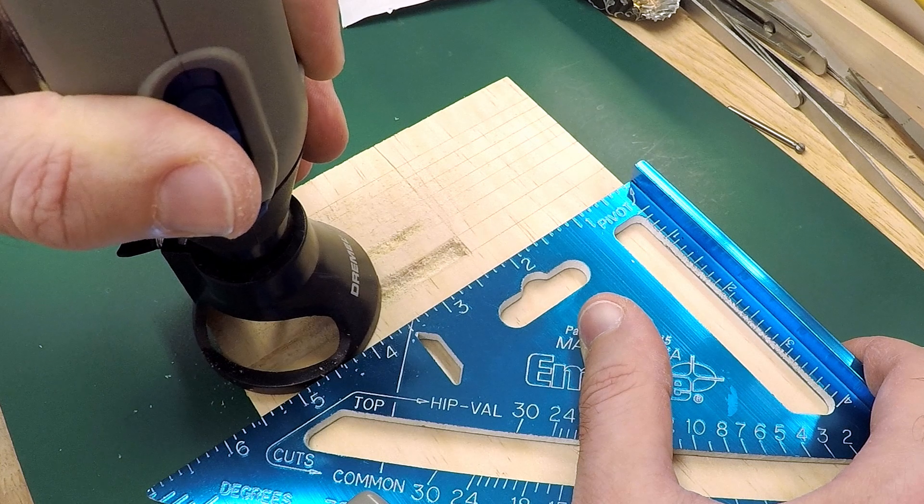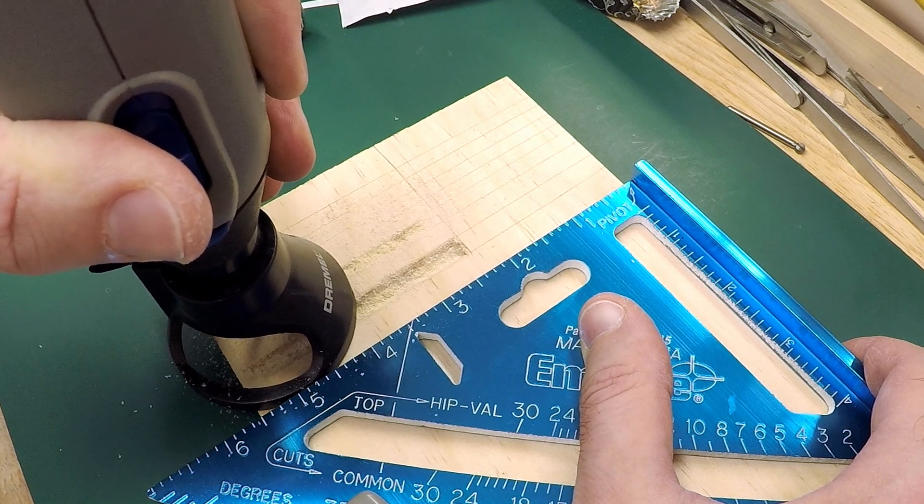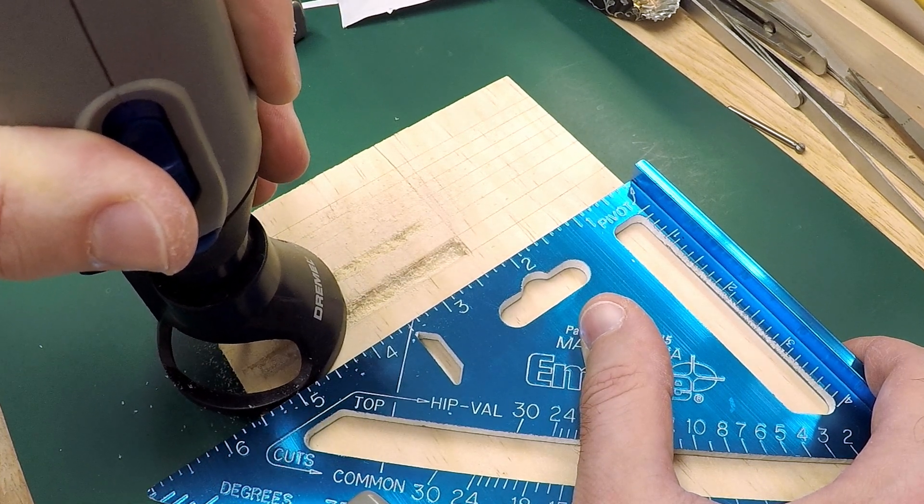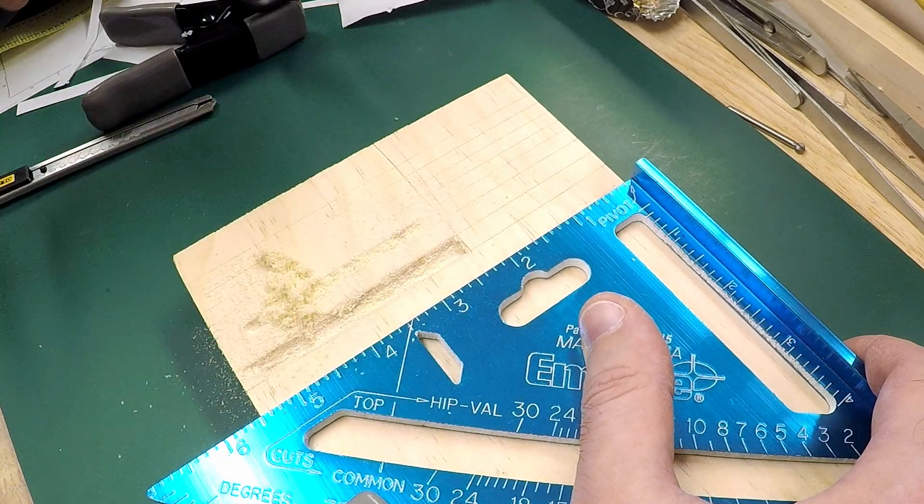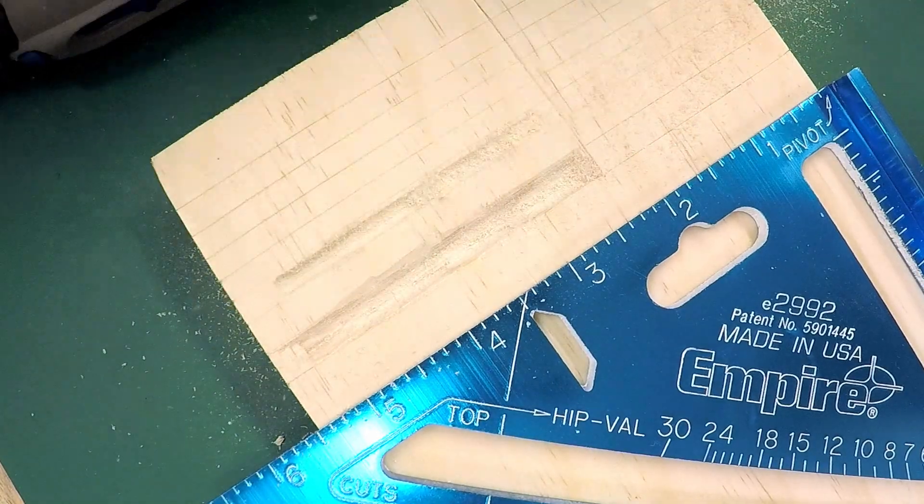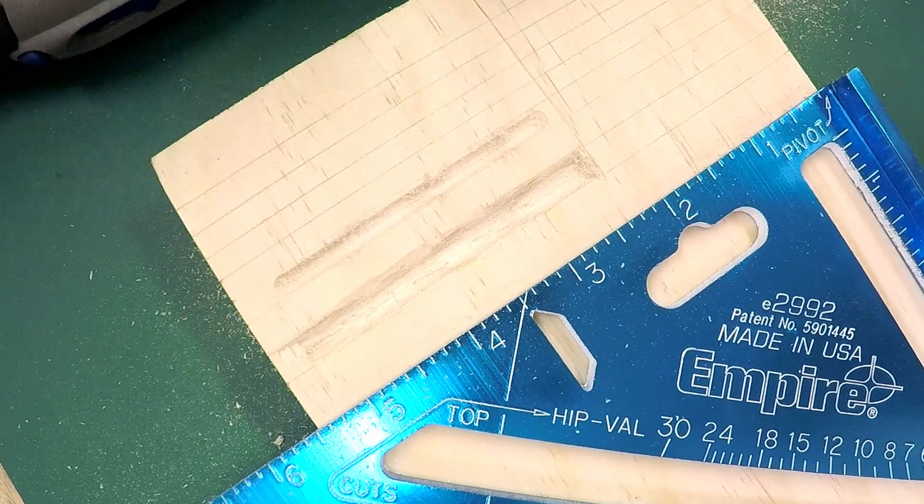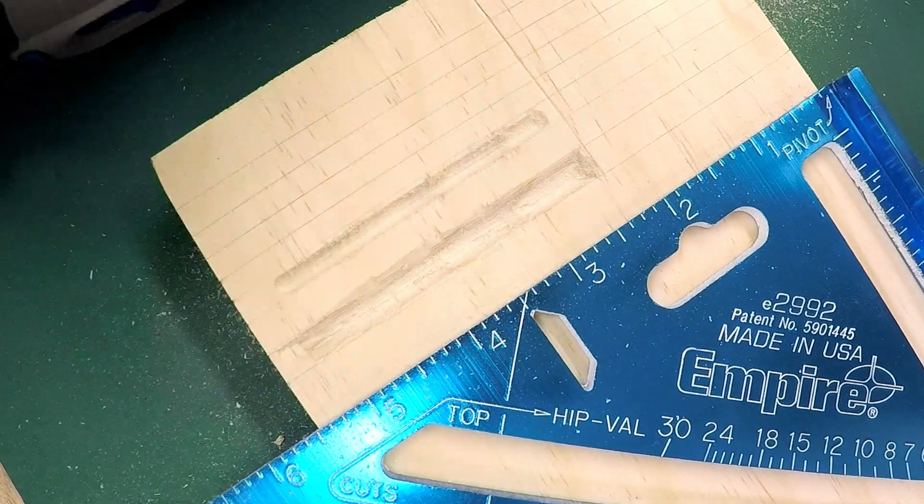When I get to the edge, I want to make sure to be careful that I'm still keeping my tool flat. It's easy to sort of tip it off the edge by accident. And you can see there, I've got a little slot. It's nice and straight. It's nice and uniform.